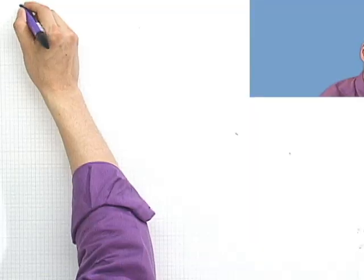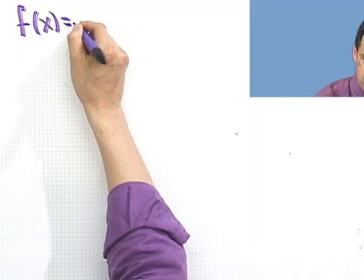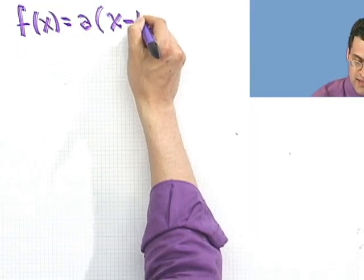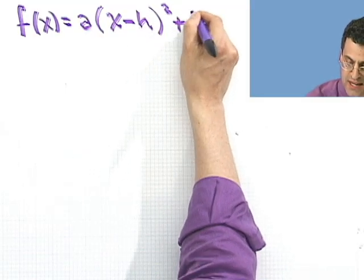OK, so the standard form of a quadratic or of a parabola is of the form f(x) equals a times x minus h squared plus k.